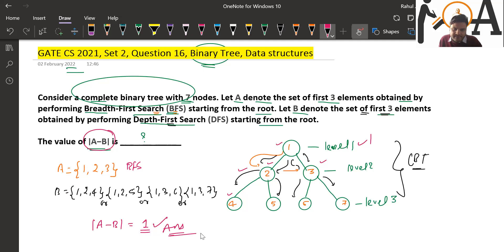Because at level 2, we are having two elements in BFS, whereas in DFS we are only having one element at level 2. So if we do A - B, one would be our answer. These are the possibilities, and regardless of which DFS path you take, one is the correct answer.